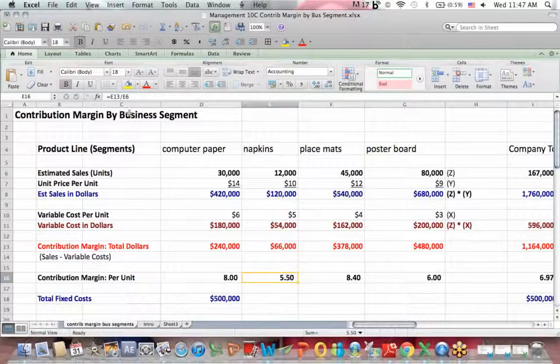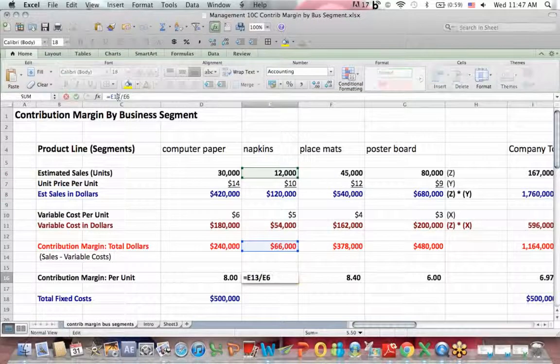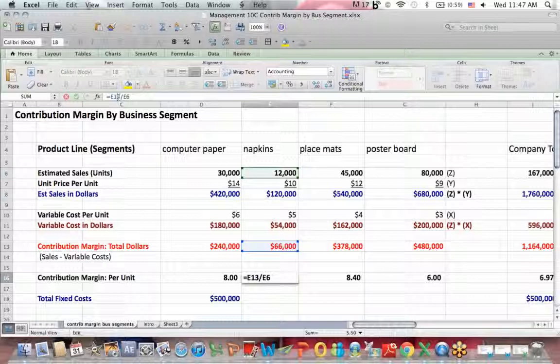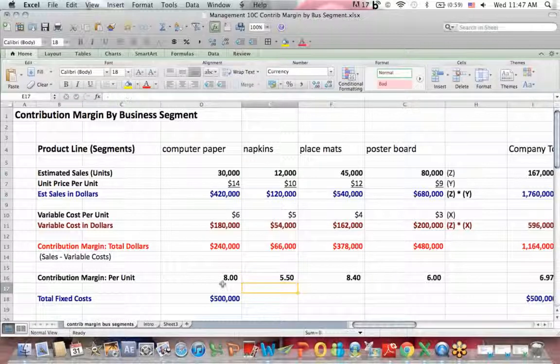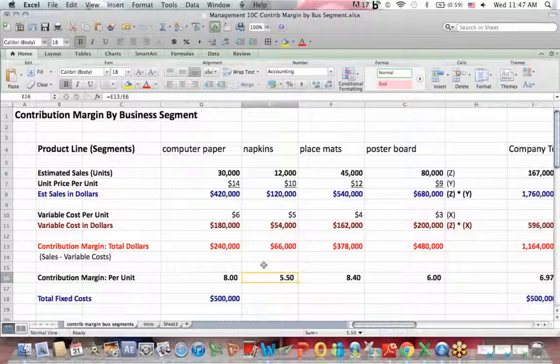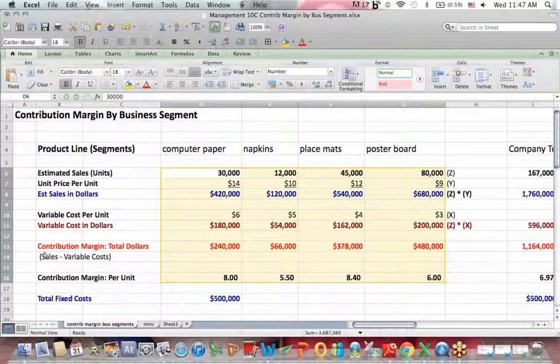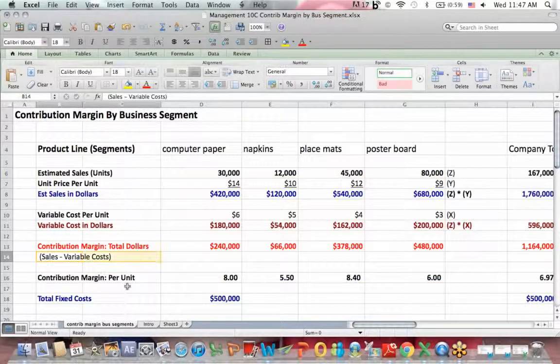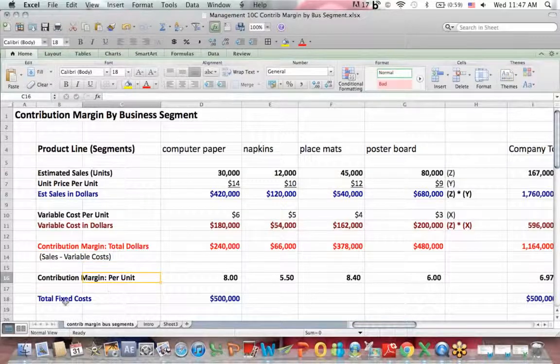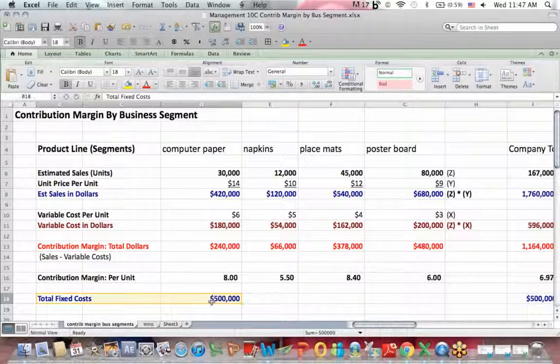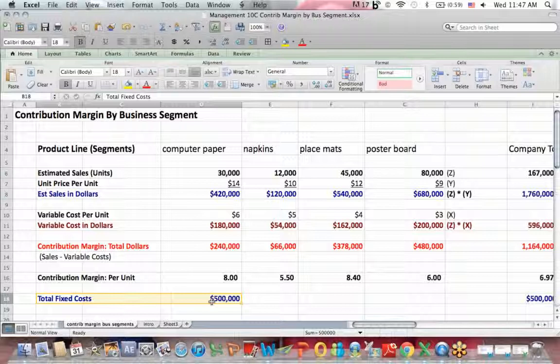So, for example, napkins, I take $66,000 total dollar contribution margin divided by napkins in units, I get $5.50 a unit. So this is a way of comparing profitability, sales less variable costs, on a per unit basis before we consider assigning fixed costs because we allocate or assign fixed costs based on some sort of allocation method.